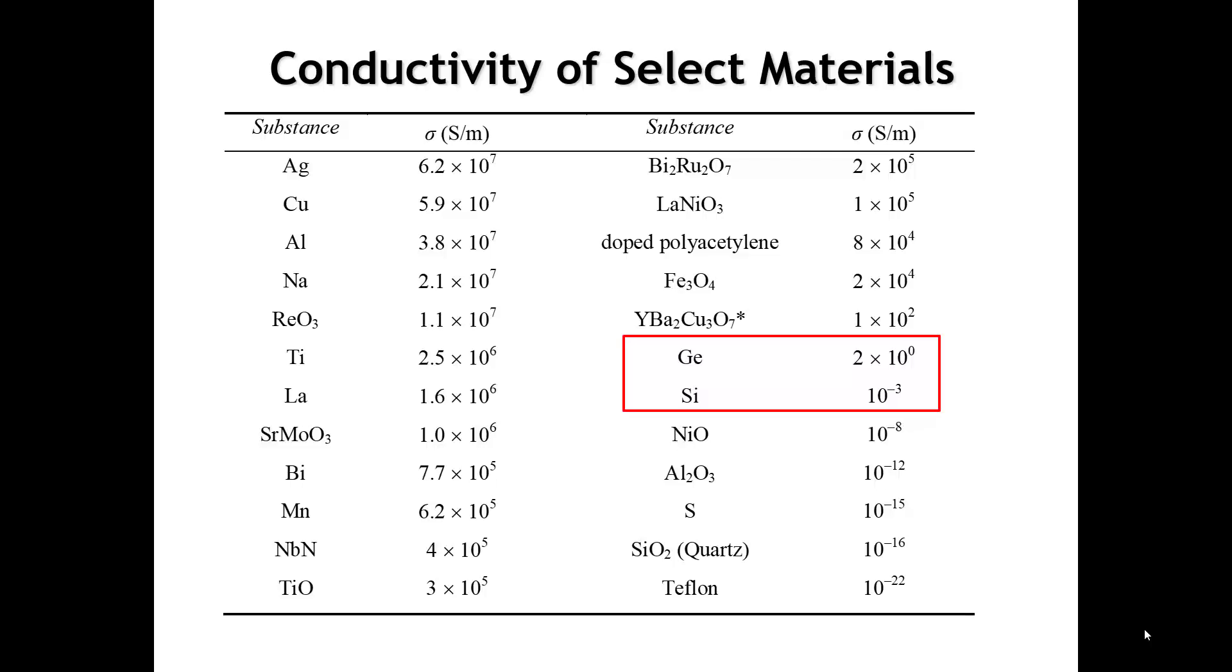But keep in mind that these are the conductivities of intrinsic pure silicon or germanium. And as we're about to learn, the conductivity of a semiconductor is very sensitive to the presence of impurities. But before we talk about impurities, let's see if we can understand what makes the conductivity in these materials so low.